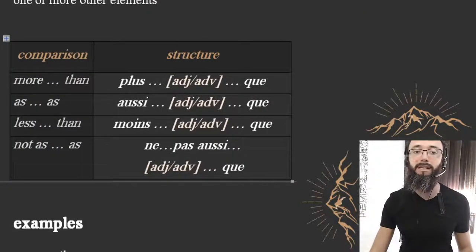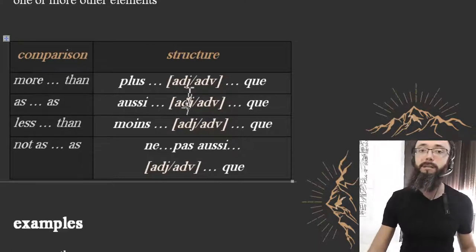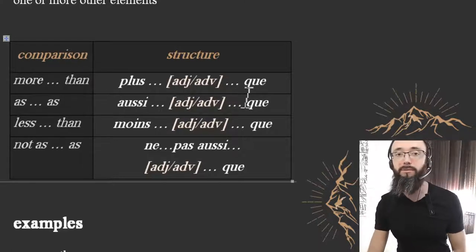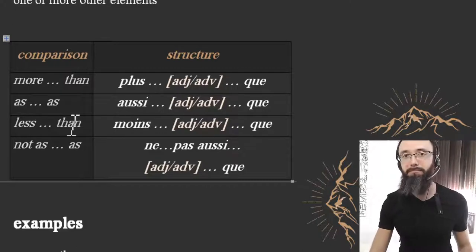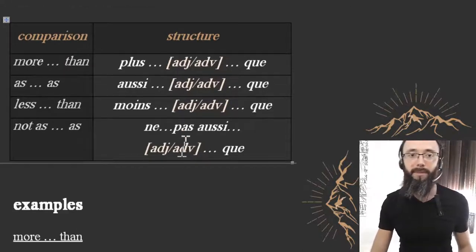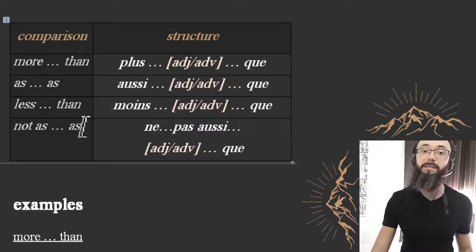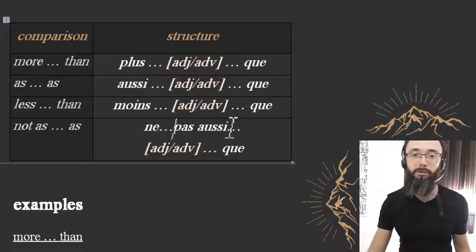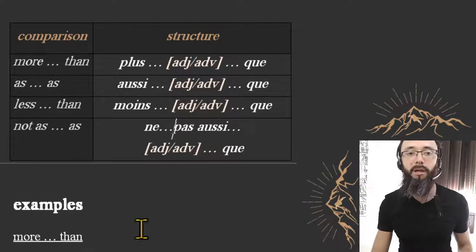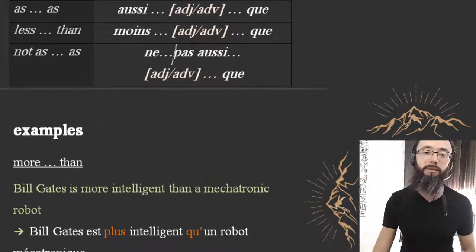For 'as big as' we say 'aussi grand que.' For 'less big than' it's 'moins grand que.' And for 'not as big as' it's 'ne pas aussi grand que.' We're going to take a great deal of examples right now because this is too dry otherwise — the point is not just to cover a table.